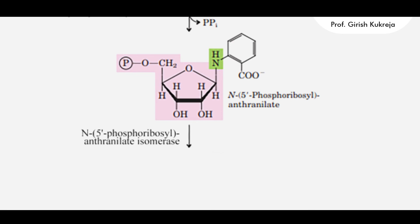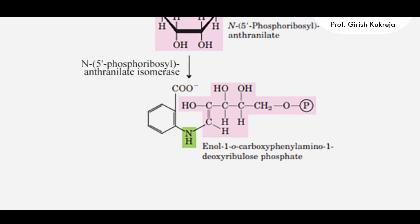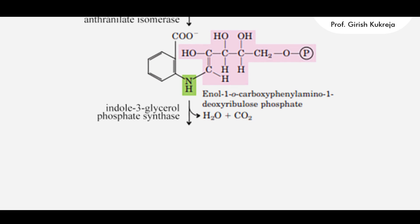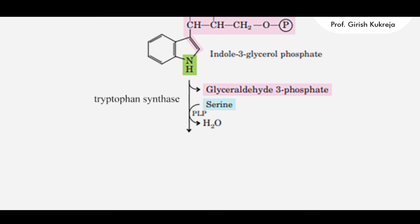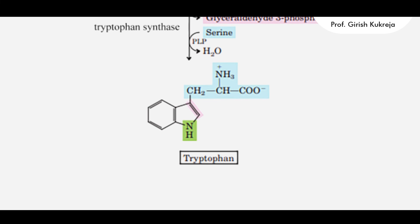This intermediate compound undergoes isomerization, and is then acted upon by indole-3-glycerol phosphate synthase. With the removal of water and carbon dioxide, indole-3-glycerol phosphate is formed. The final step is catalyzed by tryptophan synthase, which has two types of subunits — alpha and beta. The two alpha subunits catalyze the conversion of indole-3-glycerol phosphate to indole and glyceraldehyde-3-phosphate. The two beta subunits then catalyze the reaction of indole plus serine to form tryptophan and water.